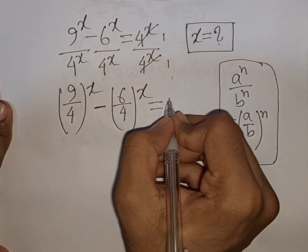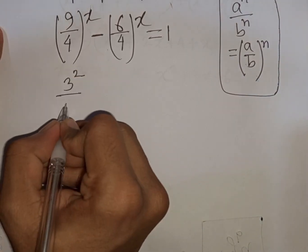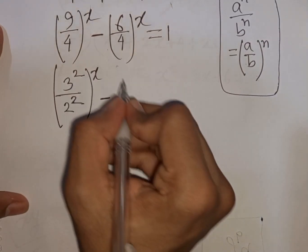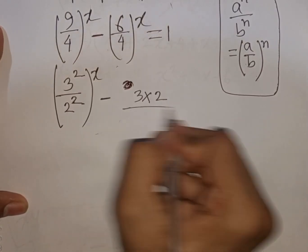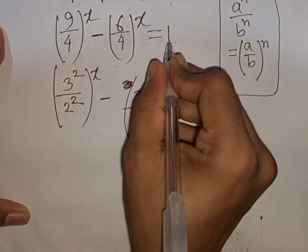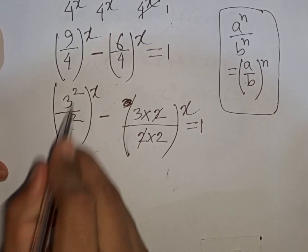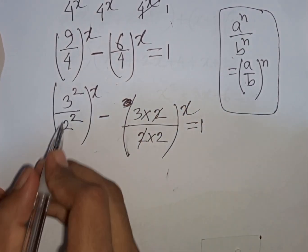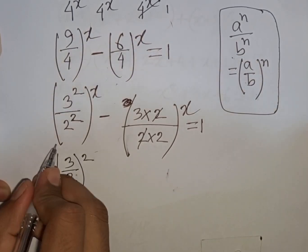This is equal to 1. Now we can write 9 as 3 squared and 4 as 2 squared. So we have (3 squared over 2 squared) to the power (x minus 6), and (3 squared over 2 squared) to the power x, applying the same exponential rule to get (3 over 2) to common powers.